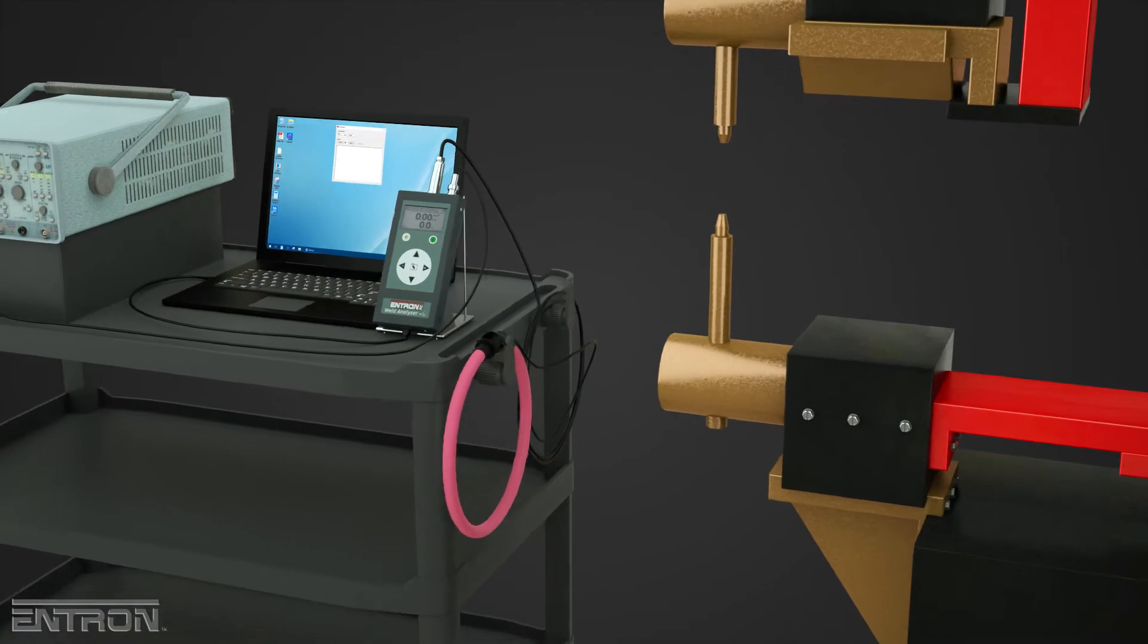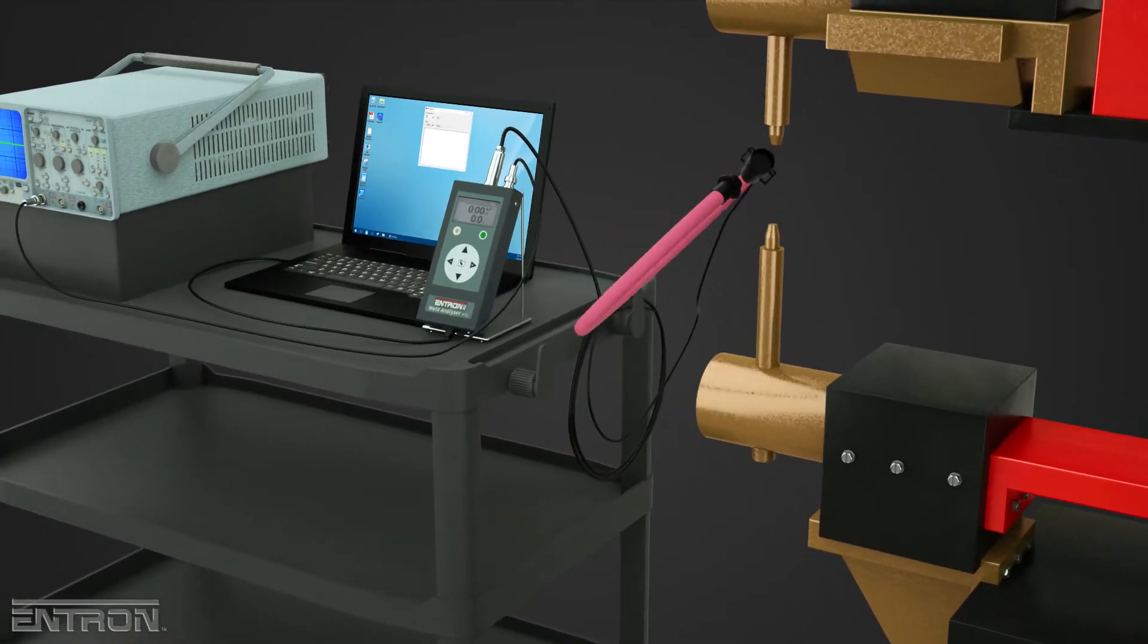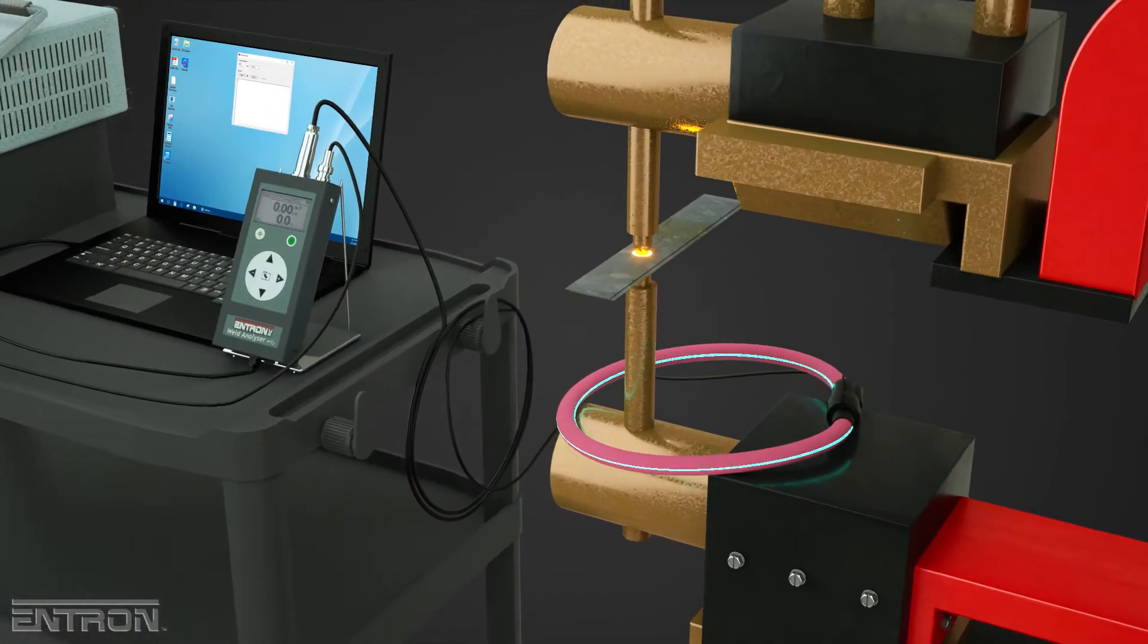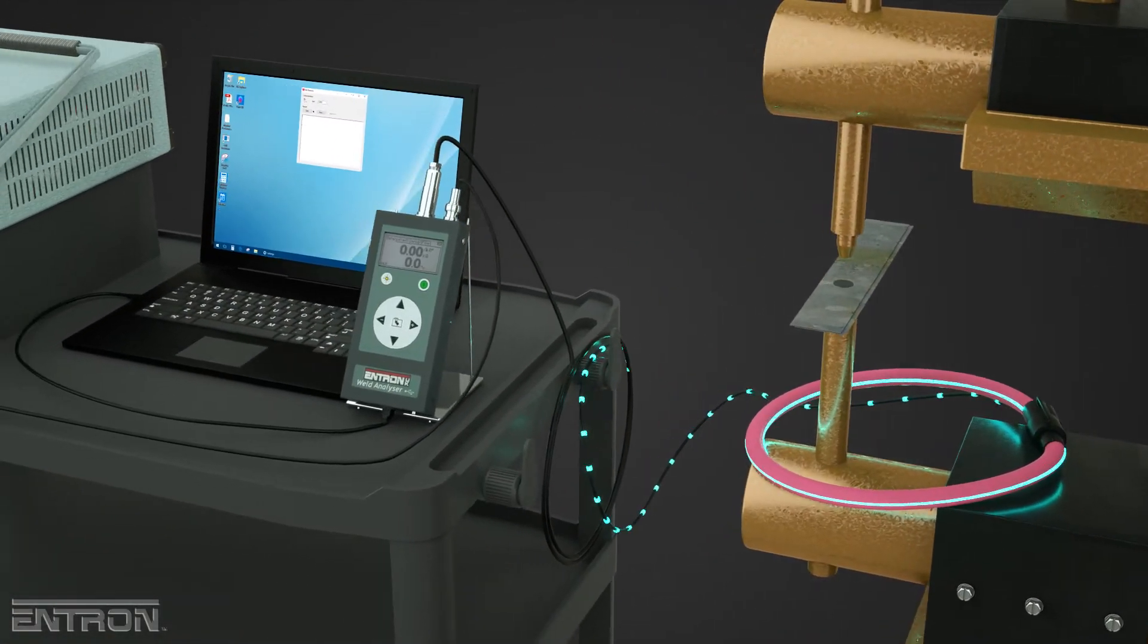Simply attach the flexible toroid coil to the welding machine and connect the cable to the WA2 unit. Make a test weld and then read the measurement off the Entron WA2 display.